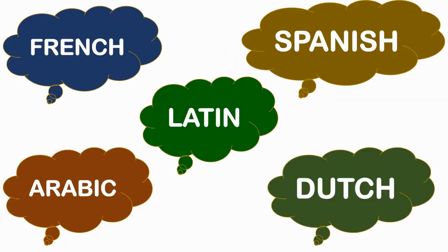Just like India, people around the world also speak different languages. People in France speak French. People living in Spain speak Spanish. People in Holland speak Dutch. People in Saudi Arabia speak Arabic. And Latin is also a language from which a lot of English language is born. Any language is used for communication, and there are so many words in a language. English too is made up of so many words.